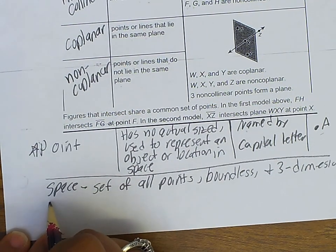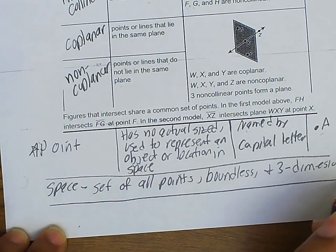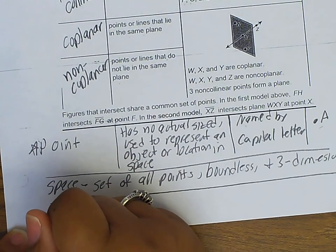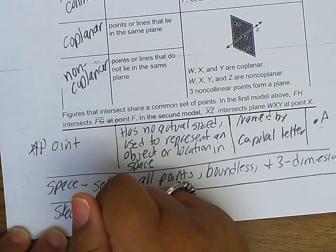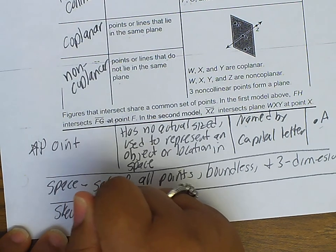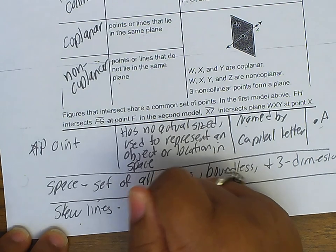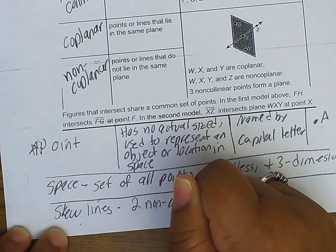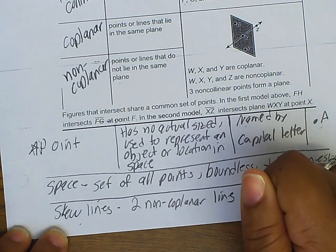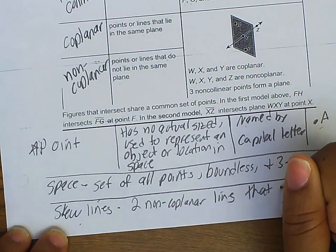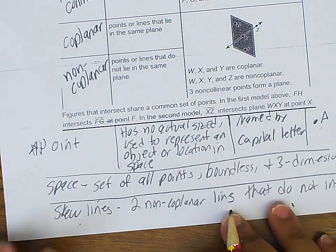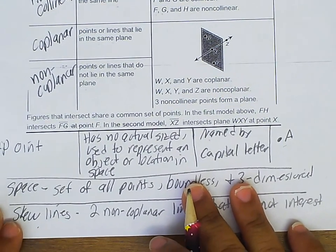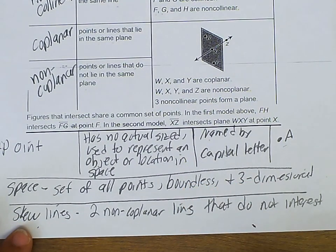And then one more word I'm just going to define. I'm not going to have the picture for it. It's skew. So if you have skew lines, there are two non-coplanar lines that do not intersect. So kind of they're like on two different planes. So they do not intersect. So sometimes people have a hard time thinking about that. You'll say, oh, that line intersects that one, but it does not. So that's what skew lines are.